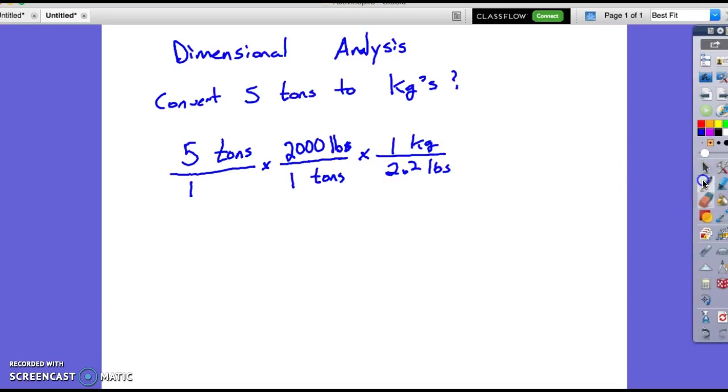Now here's what's interesting. If you go through and we're doing fraction work and doing what's called cross reducing or cross factoring. I have a tons on the bottom a tons on top. They cross off. I have a pounds on top a pounds on bottom. They cross off.